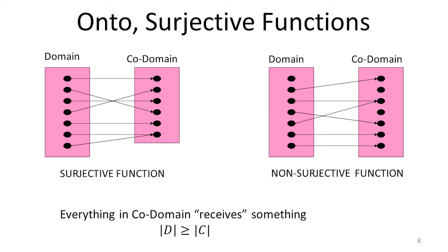Similarly, with onto or surjective functions, if we can find a surjective function from a domain to a codomain, then the domain must be at least as large as the codomain. Because to be surjective, we need some element from the domain mapping to each element in the codomain, and since this is a function, one element can't map to two different elements. In order to cover the entire codomain, there had to have been at least as many things in the domain.